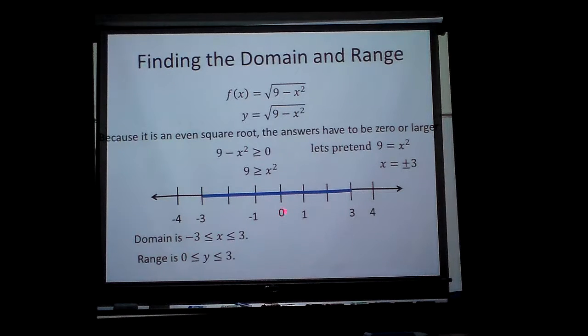And if I use 0, the smallest value that is not negative or positive, because when you square the negative, it's going to become positive, 0 squared is 0, 9 minus 0 is 9, and the square root of 9 is 3. So the range is only from 0 to 3. So I found the domain and the range.